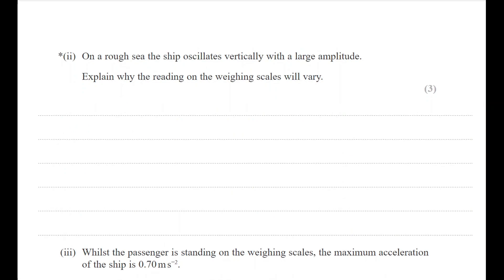On a rough sea with large amplitude oscillations, the reading on the weighing scales will vary. Crucially, the scale reads the normal contact force, not the weight. When the sea is calm and there is no acceleration, the normal contact force equals weight. But when the ship accelerates upwards — as waves push it up — that upward acceleration must come from the object the passenger is standing on: the weighing scale.